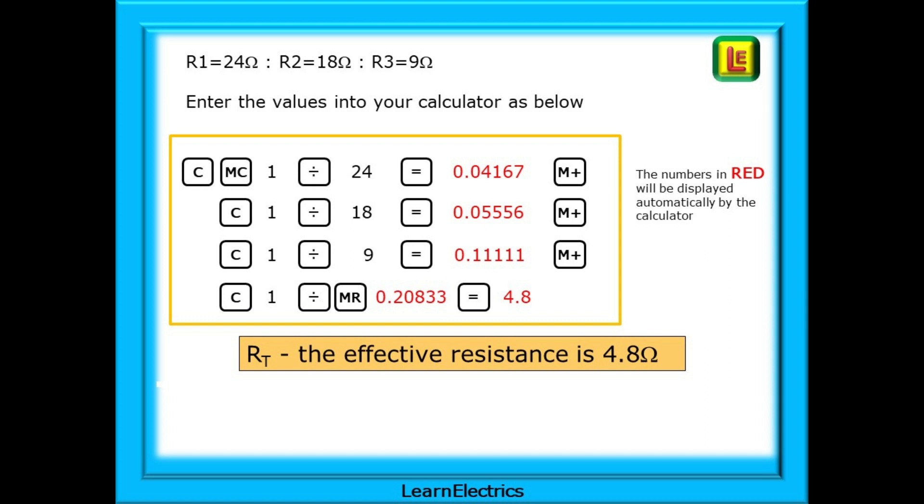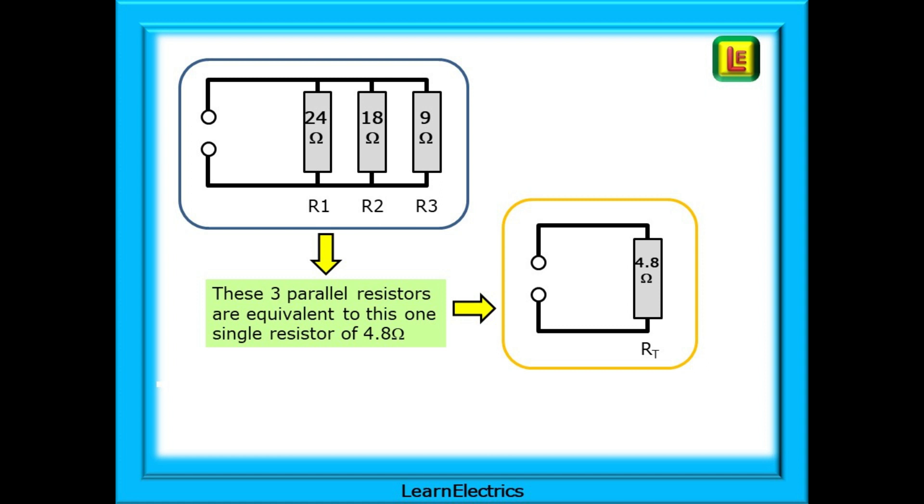C for clear again, 1 divided by 9 equals, and 0.11111 is shown. Press memory plus to put it into the memory. C for clear again, and now 1 divided by MR for memory recall will display 0.20833. Then press equals, and the display will show the answer 4.8. The effective resistance is 4.8 ohms. 4.8 ohms is the single resistance that the three parallel resistors make. The only way to learn this is to practice over and over again until it becomes second nature. You don't want to be learning this on the day of the exam.